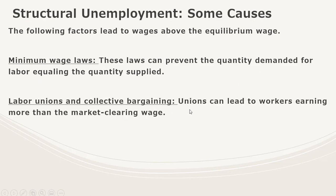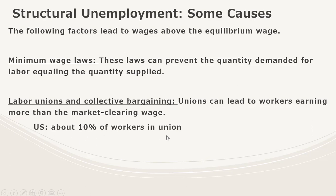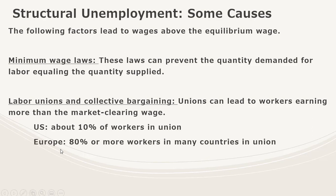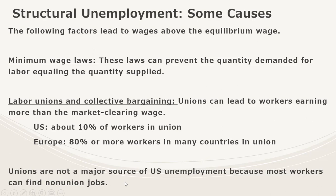Second, labor unions and collective bargaining. Unions can lead to workers earning more than the market clearing wage, creating an excess supply of labor for union jobs. In the U.S., however, about 10% of workers are in a union. In Europe, about 80% or more workers in many countries are in a union. So unions are not a major source of U.S. unemployment because most workers can find non-union jobs.